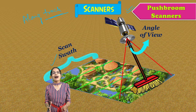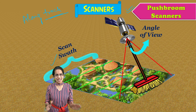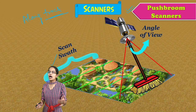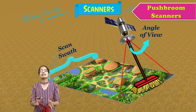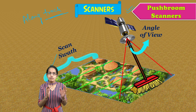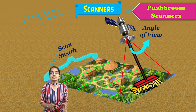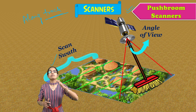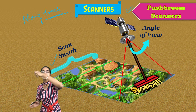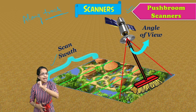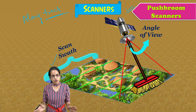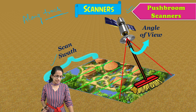There are two important types of multi-spectral scanners: the whisk broom and the push broom scanner. The whisk broom scanners move across the line, whereas the push broom moves along in the same direction as the satellite. That's the major difference between both scanners.